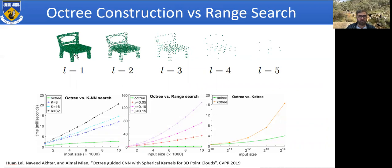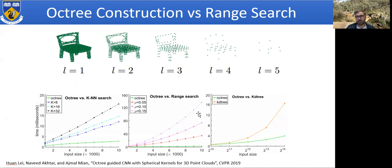The octree-like structure downsamples points very quickly. At level one, a point cloud of chairs looks clear; at the second layer it becomes sparse; at the fourth layer only a few points remain; at layer five it does not even look like a chair. However, building a point octree is very efficient compared to KNN search and range search. We show graphs of how the complexity of KNN search increases very fast, whereas that of the octree remains tractable, and range search has an even more nonlinear relationship with the number of input points.